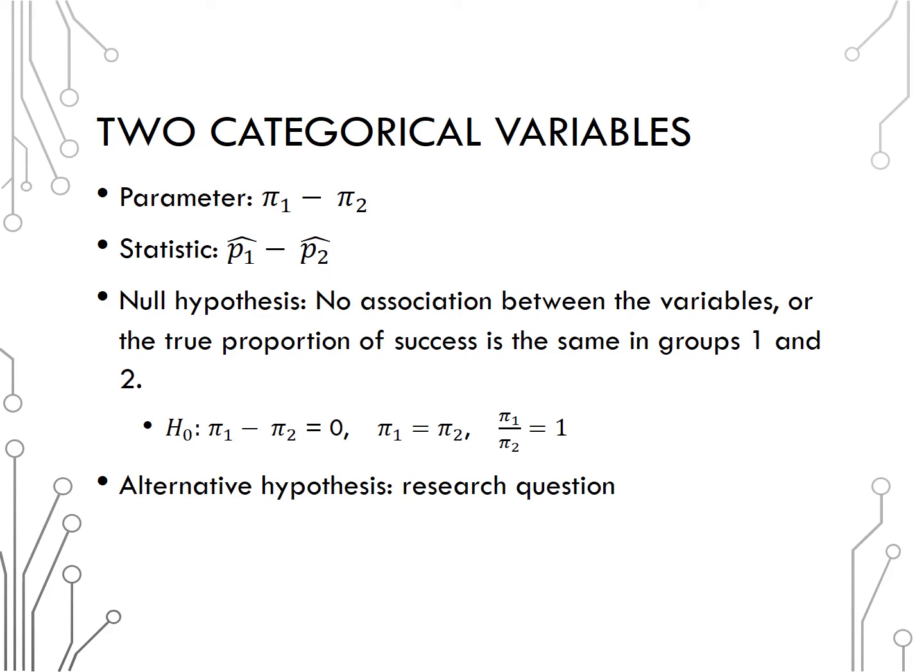The alternative hypothesis still depends on the research question. We could use any of the three notations seen in the null hypothesis and we would just need to change the equal sign to a greater than, less than, or not equal to sign based on what we hope to prove.